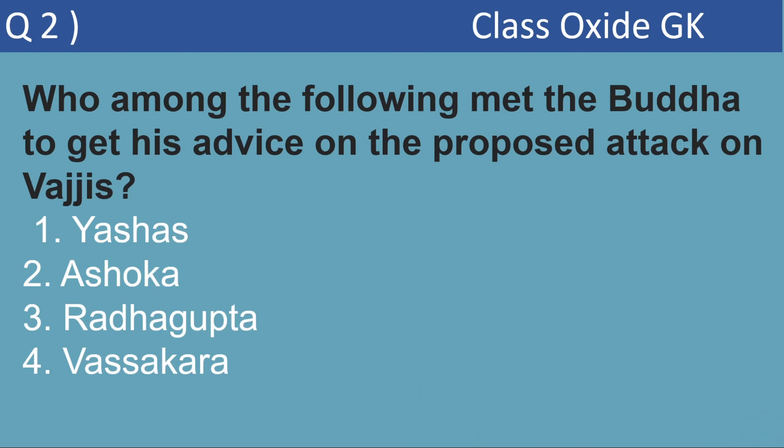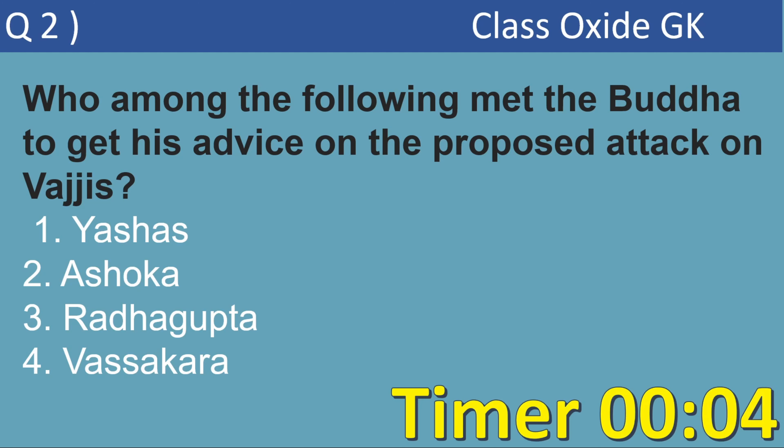Next MCQ. Who among the following met the Buddha to get his advice on the proposed attack on Vajjis? The options are Yash, Ashoka, Radha Gupta, Vasakara. This is a very interesting question, and the correct answer is option number 4, Vasakara.